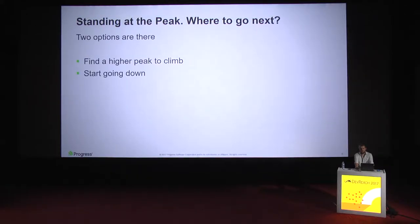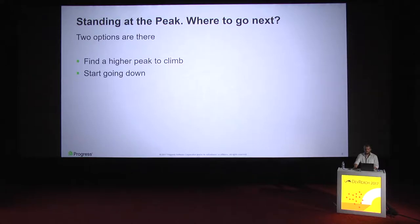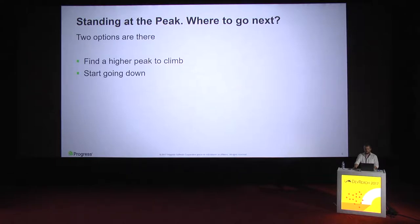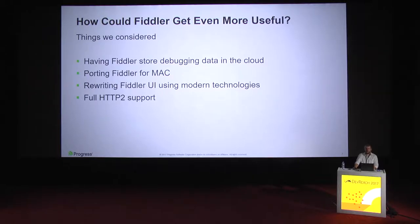At this point, we were pretty much standing at the peak, and the question is where to go next. There are two options: you either find a higher peak to climb, or you start going down. At that point, there was no real competition for Fiddler — there wasn't another debugging proxy that was better, so we could catch up with them or get a general sense of direction. We had to think of something completely different. We chose the first option because it was the most exciting one — going down isn't really exciting.